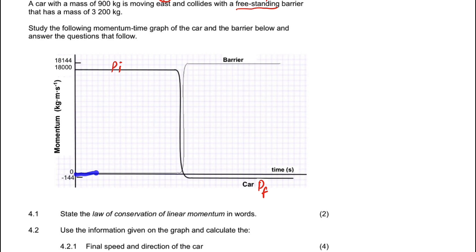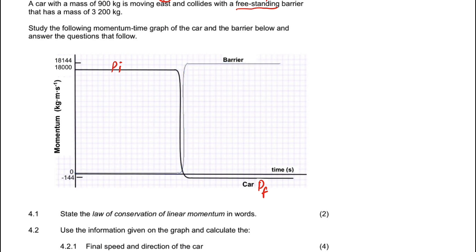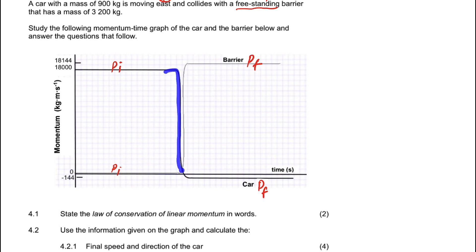The barrier was initially stationary. When the car collided with it, the barrier remained stationary up to the point of collision, but during the collision its momentum increased and it then moved. So the initial momentum of the barrier is zero and its final momentum is positive. During the collision time, the momentum changes — the car's momentum decreases while the barrier's momentum increases.